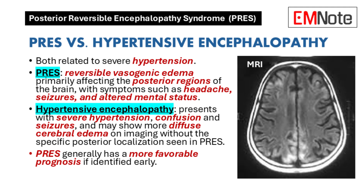PRES and hypertensive encephalopathy are both neurological conditions related to severe hypertension, but they differ in their characteristics. PRES is marked by reversible vasogenic edema, primarily affecting the posterior regions of the brain, with symptoms such as headache, seizures, and altered mental status, typically visible on MRI as bilateral posterior symmetrical hyperintensities.